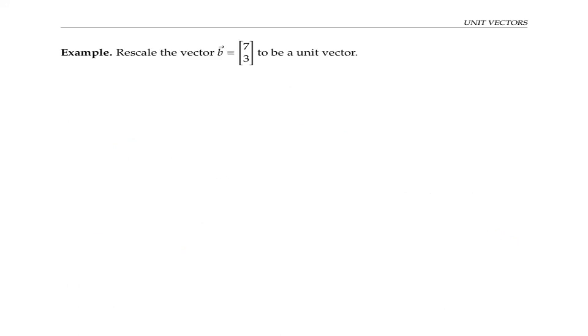Suppose, for example, we want to rescale this vector b to be a unit vector. Well, the length of b is the square root of 7² + 3², that works out to the square root of 58. So our rescaled vector is going to be (1/√58) times b, or in other words, (7/√58, 3/√58).